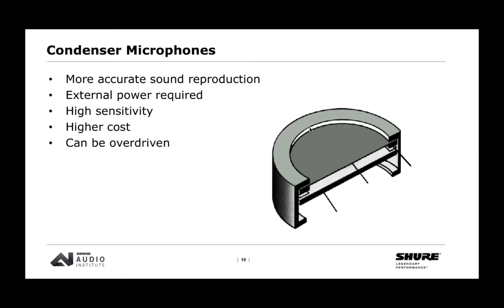Moving on to the condenser microphone — condensers are more accurate in their sound reproduction but are more delicate and require some source of external power. This power can either bias the microphone or activate the FETs that amplify the signal. They have high sensitivity and can pick up just about everything — air handlers, air conditioners, room noises. That can be a pro and a con depending on application. Condenser microphones are a bit higher cost and don't handle quite as loud sound levels as dynamics — they can be overdriven.